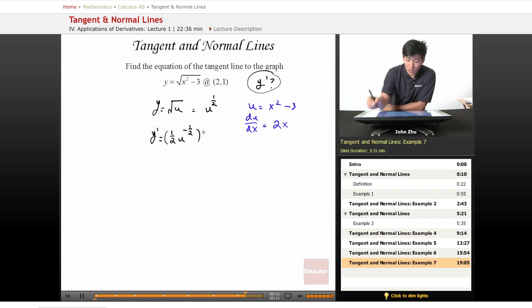And this is going to be multiplied by 2x. Rewriting this, y is going to equal 1/2 times x squared minus 3 to the negative 1/2 times 2x.